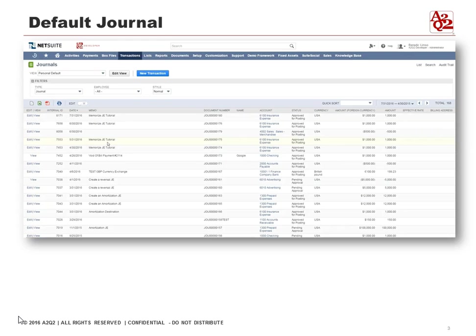In our case, we wanted the internal ID, the date, the memo, the document number, the name, the account, the status, and the currency. We can always change what's shown — at the top we can see more columns or fewer columns.